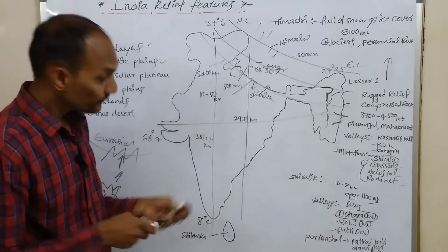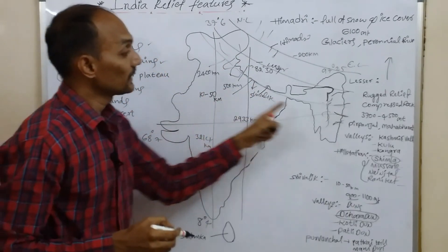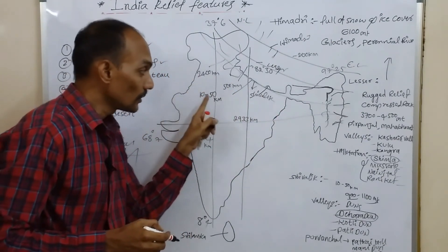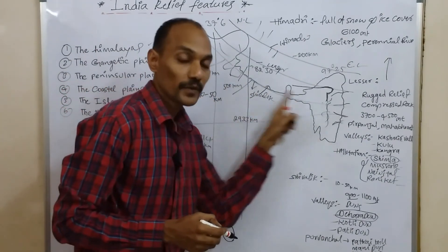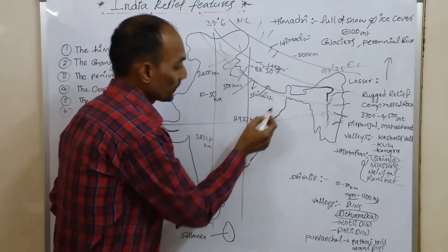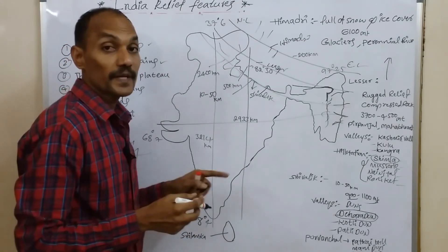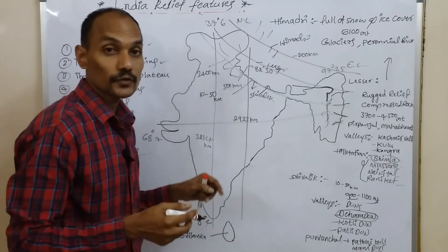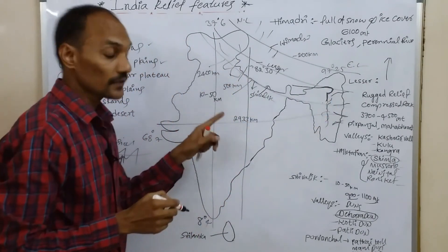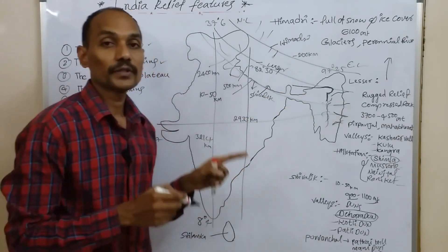Due to the Himalayas, northern plains are formed. Also, these perennial rivers are flowing in this area. Due to these northern plains and perennial rivers, farmers grow different types of crops here. Our Indian economy depends on agriculture. Agriculture is fully developed due to the Himalayas, northern plains and perennial rivers. That's why the Himalayas play a very important role.